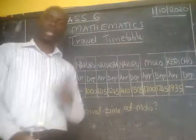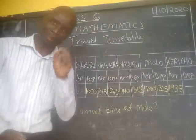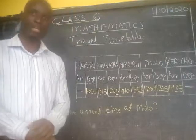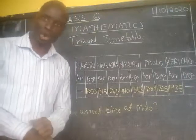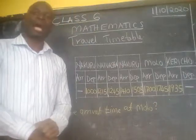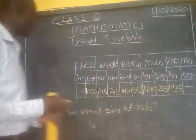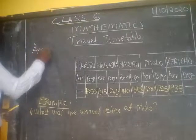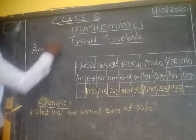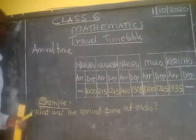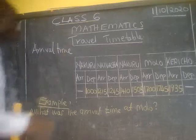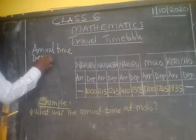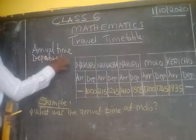In the travel timetable, there are two key and crucial elements and terms you must understand. The first of these terms is called arrival time, and the second one is called departure time.